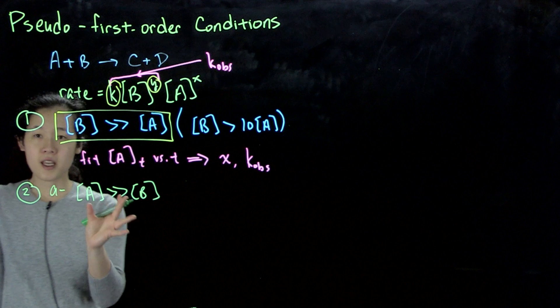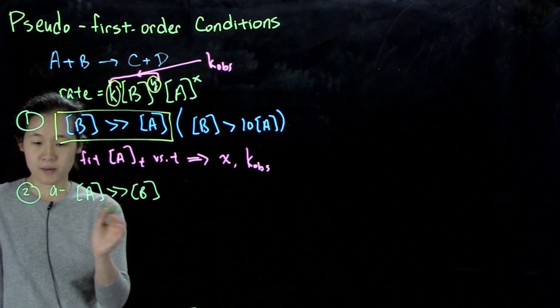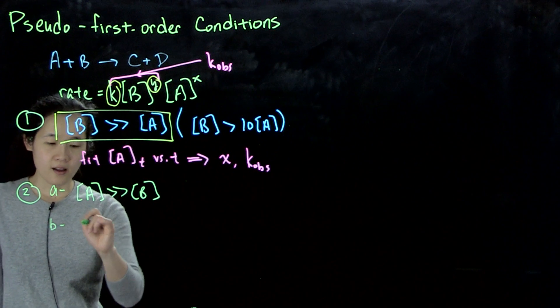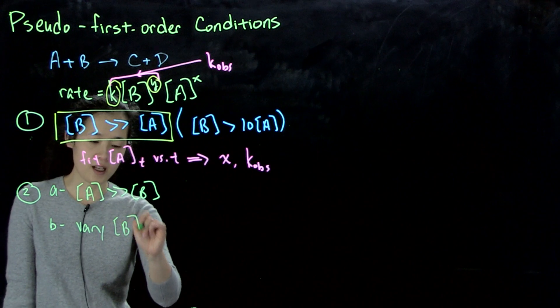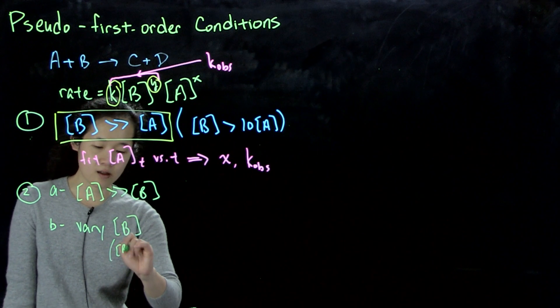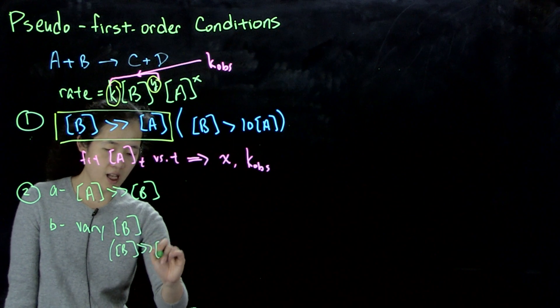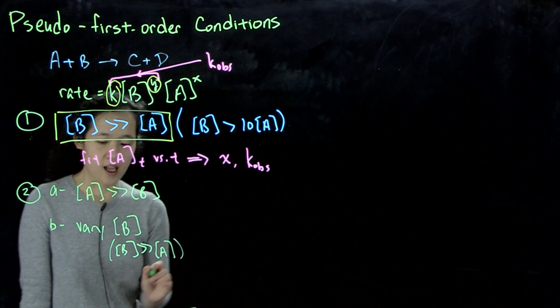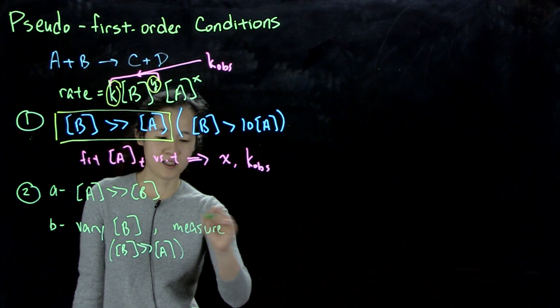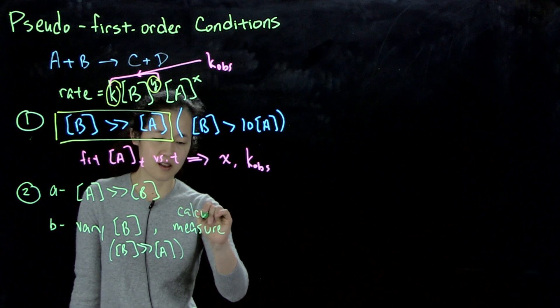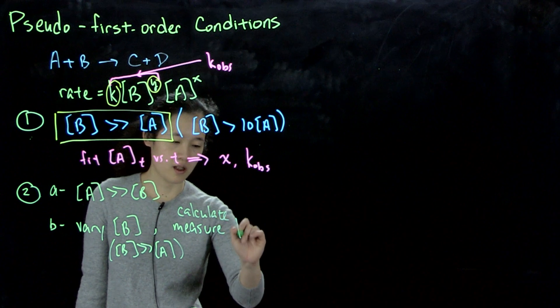Possibility two, if this is not convenient for your experiment, you could instead vary your initial concentration of B, but this B is still a lot greater than A. And measure, or calculate, sorry, rather, calculate k_ob.